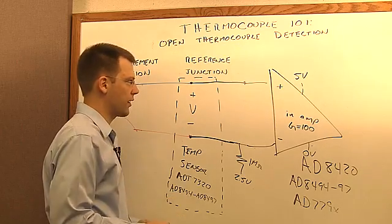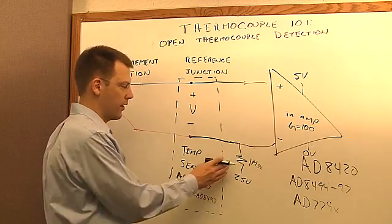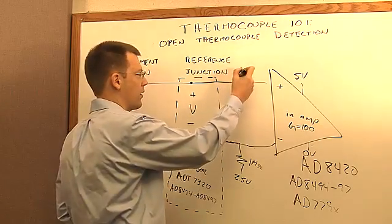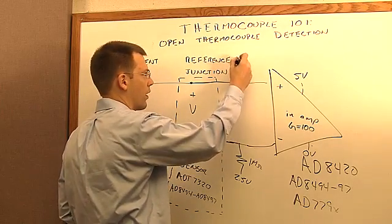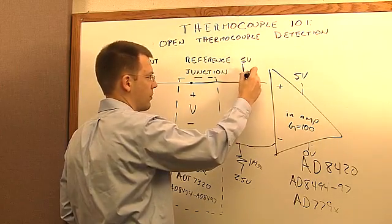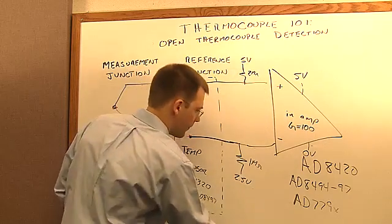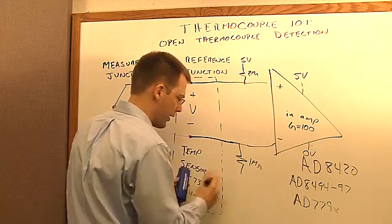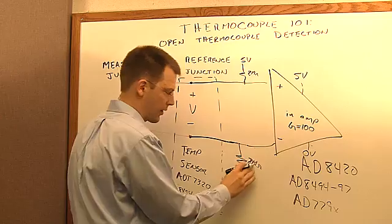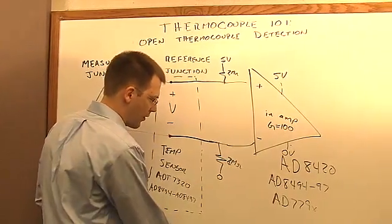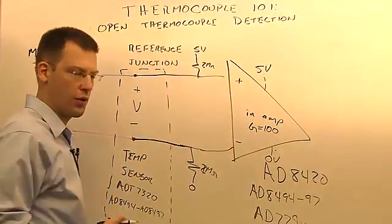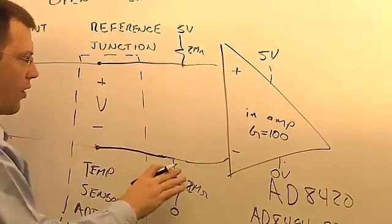Now what a lot of folks like to do is actually split this resistance and do the following, where I put, say, two megaohms here, and I ground this, and say I make that two megaohms. And what did we do here? So let's talk about kind of what we did.